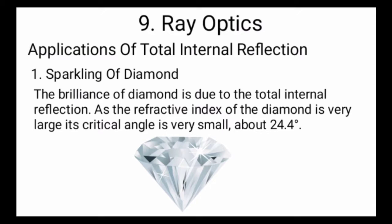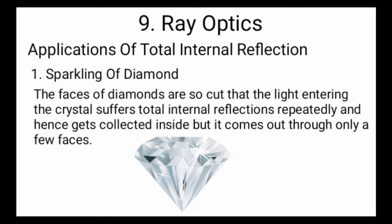One of the applications of total internal reflection is the sparkling of diamond. The brilliance of diamond is due to total internal reflection. As the refractive index of diamond is very large, its critical angle is very small — about 24.4 degrees. The faces of diamonds are so cut that the light entering the crystal suffers total internal reflection repeatedly.